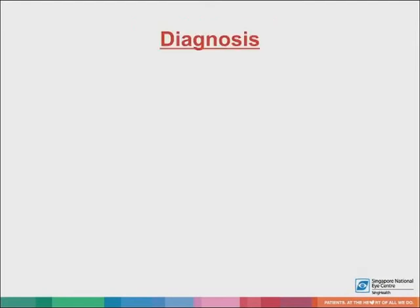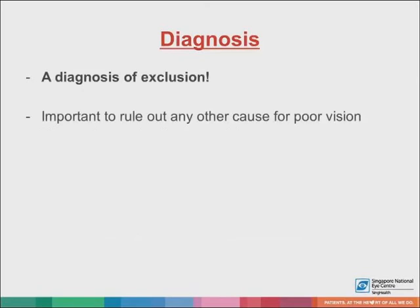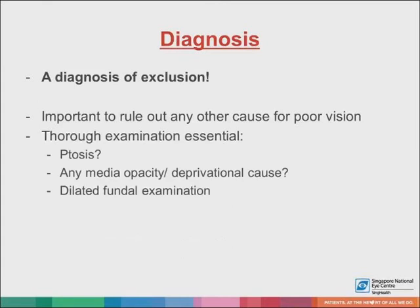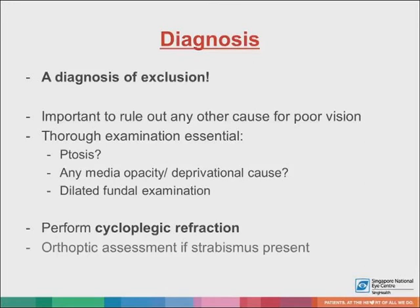So how do we diagnose amblyopia? Firstly, it's important to note that it's a diagnosis of exclusion — it is important to rule out any other cause for poor vision. Thorough examination is absolutely essential. Does the child have ptosis obstructing the visual axis? Is there a cataract? A dilated fundal examination is necessary in all children with suspected amblyopia. A cycloplegic refraction should also be performed, especially in the presence of a refractive error and a strabismus. And if there's a strabismus, an orthoptic assessment should also be performed.